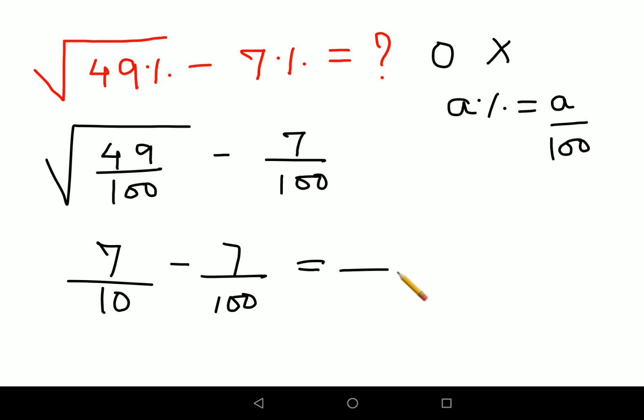Now taking LCM you will have 100. So this will have 70 minus 7, which comes out to be 63 upon 100.